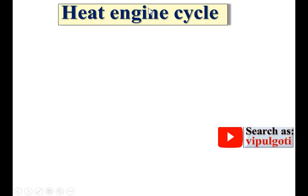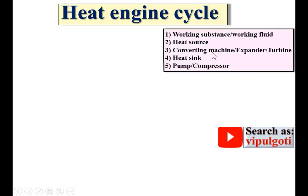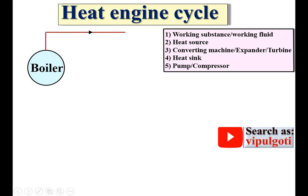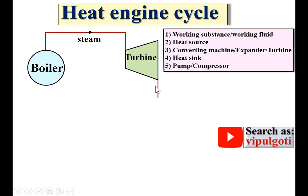Now let's discuss the heat engine cycle — how these five important components are connected. Starting from the first component, the boiler produces steam. This steam flows to the second component, the expander or turbine, where steam expands and work is produced. Then that steam passes through the condenser. Here the steam entering the turbine is high-pressure steam and the steam leaving is low-pressure steam.